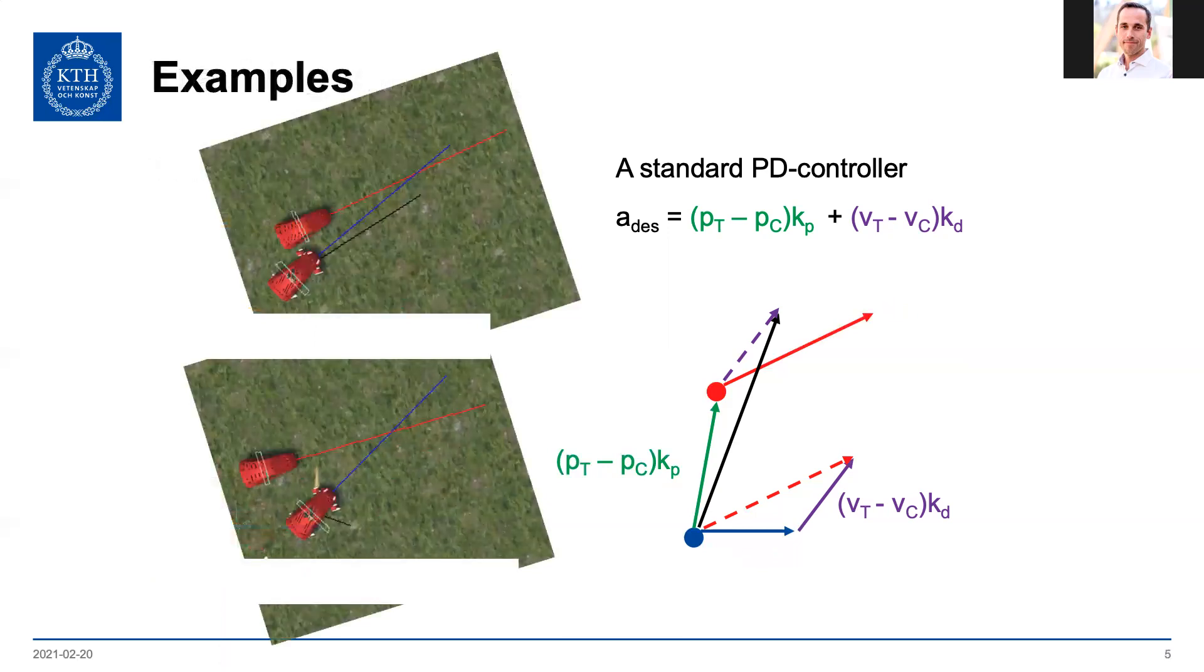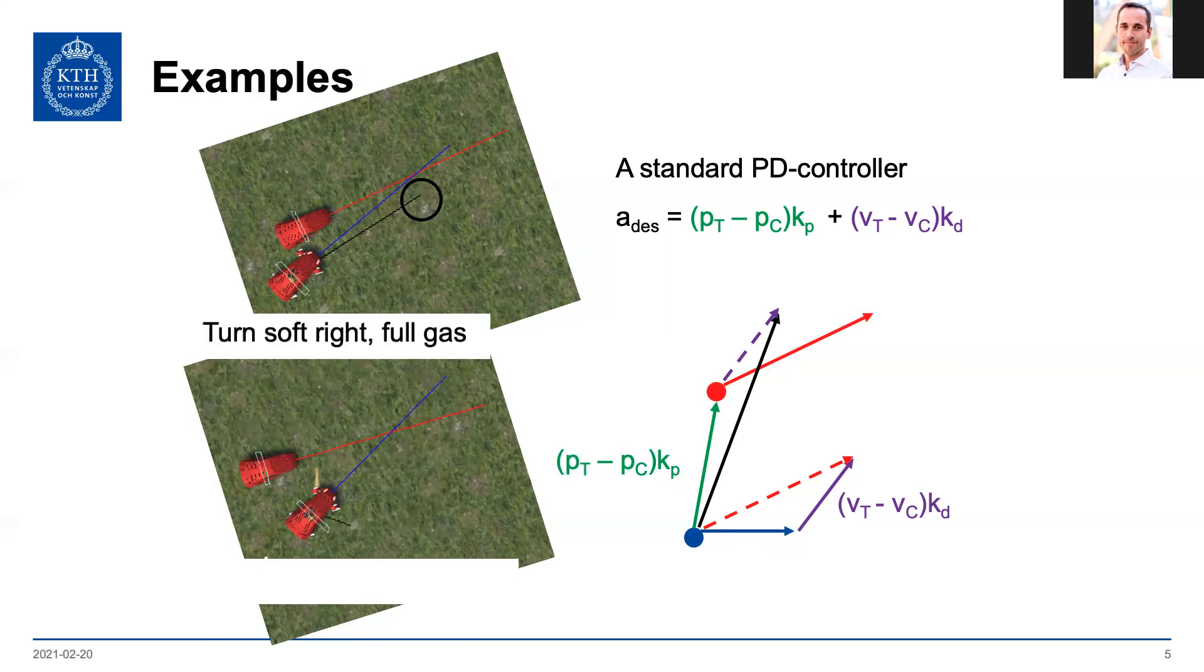So let's see two examples here. In the top case, the trajectory we're trying to track, or the car we're trying to track, has the red velocity vector, and our car has a blue velocity vector, and the desired acceleration is the black vector up here. So in this case we're a bit behind and a bit too slow, so that means the desired acceleration is a soft right turn and a lot of gas.